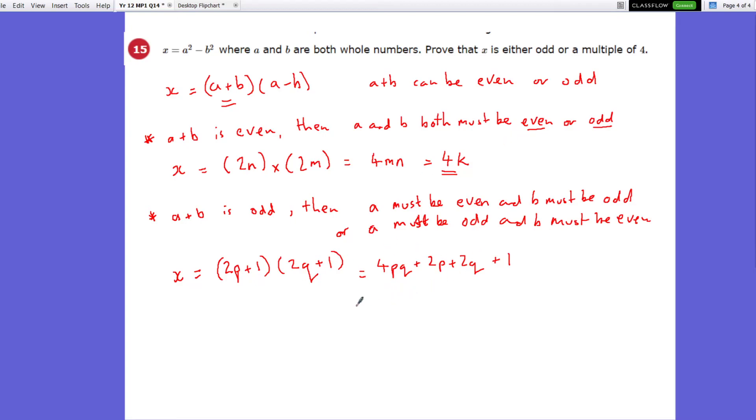So when a plus b is odd, x ends up. So if we can put this in here, and this is a multiple, this is a multiple of 2, so we get 2 times (2pq plus p plus q) close bracket plus 1, will end up x being an odd.